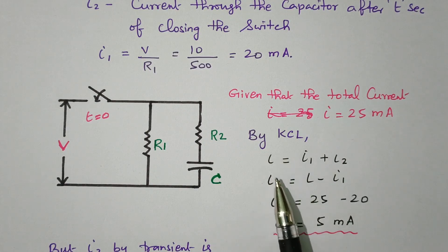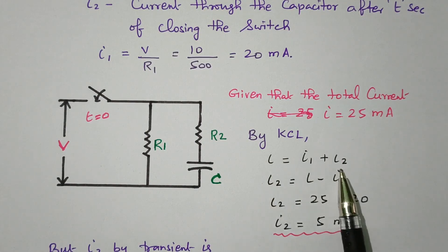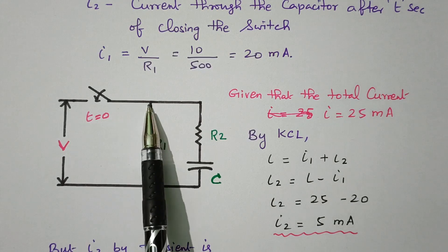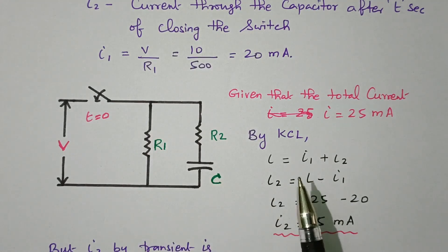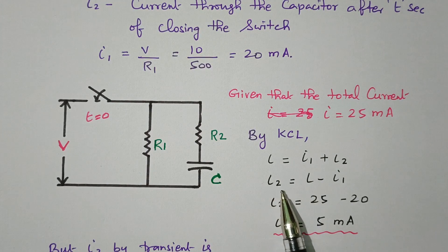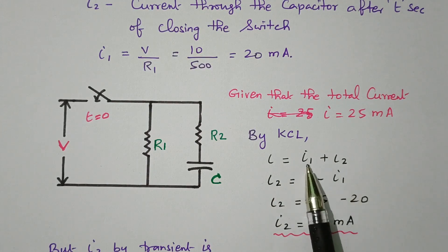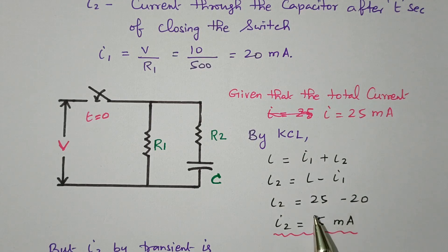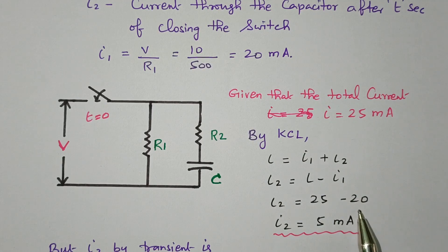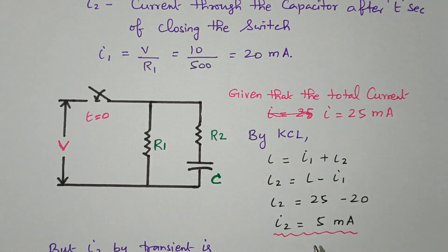Given that the total current is 25 milliampere, by using Kirchhoff's current law: I equals I1 plus I2, where the total current divides into I1 and I2. Rearranging: I2 equals I minus I1. I is 25 milliampere, I1 is 20 milliampere, so I2 is 5 milliampere. Now we know I1 is 20 milliampere and I2 is 5 milliampere.